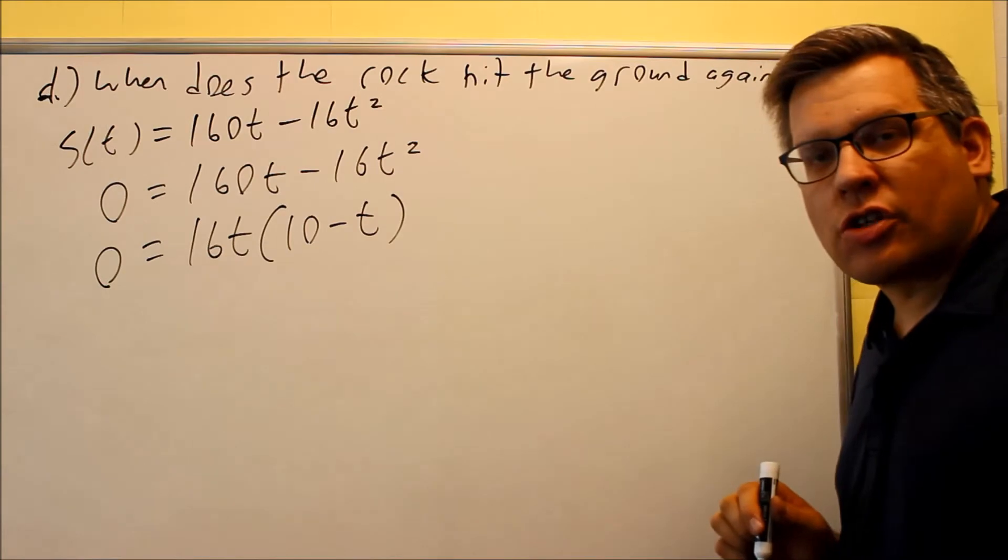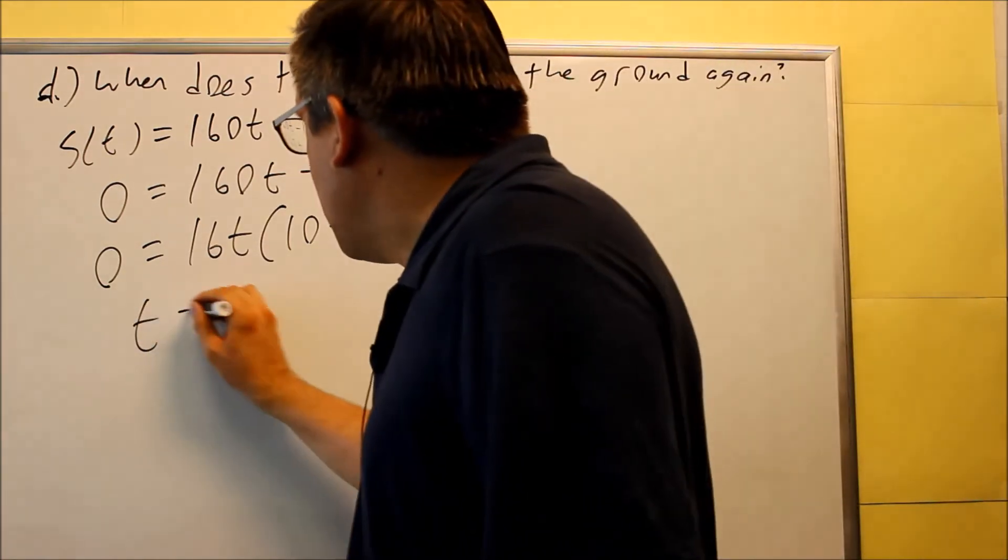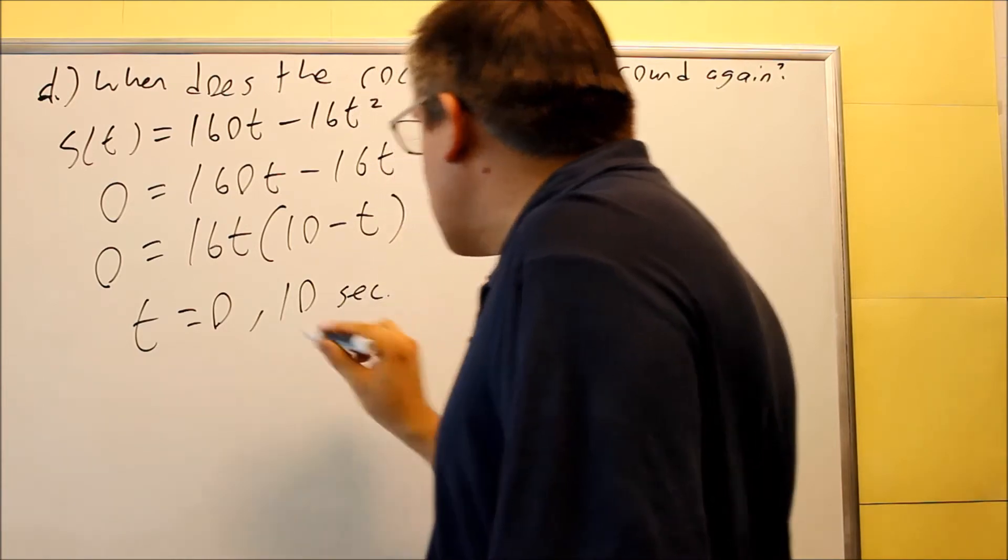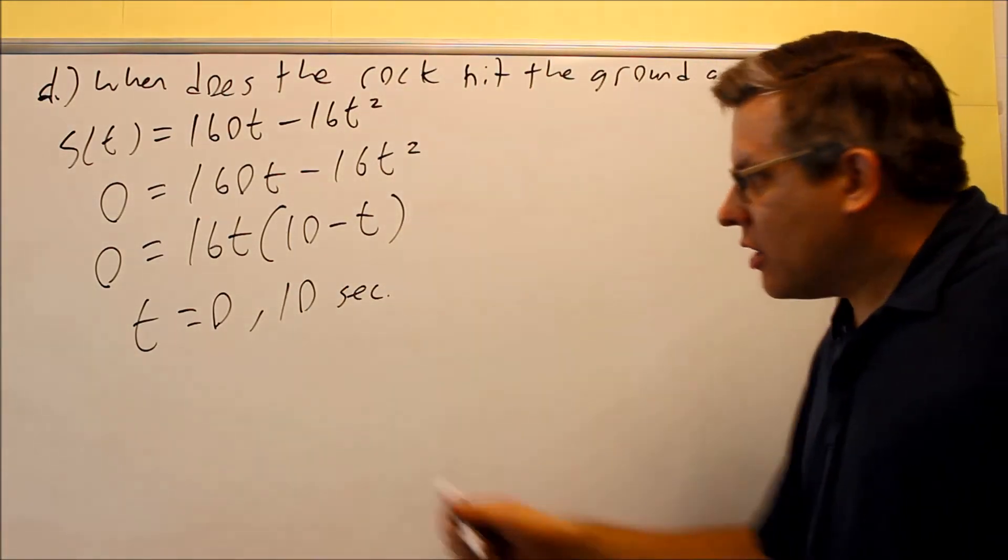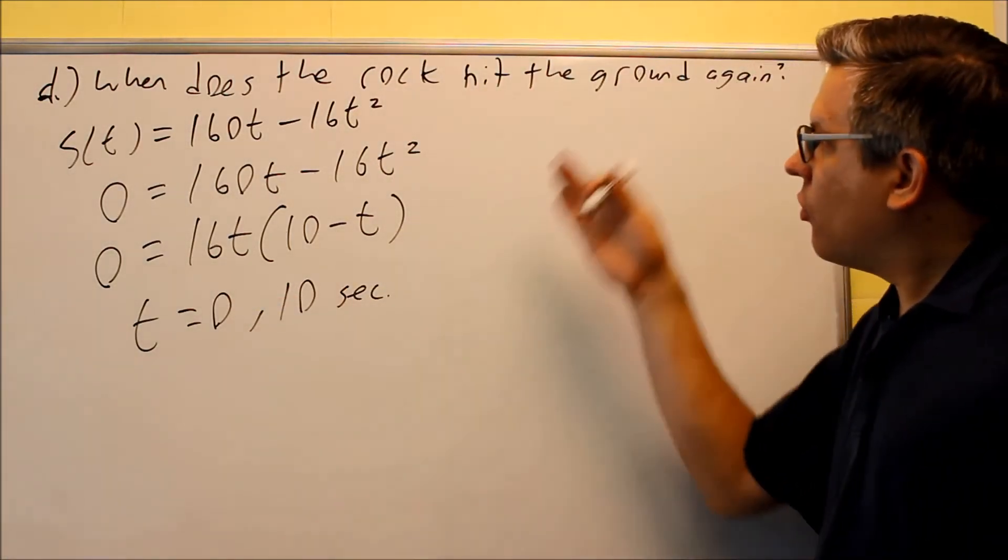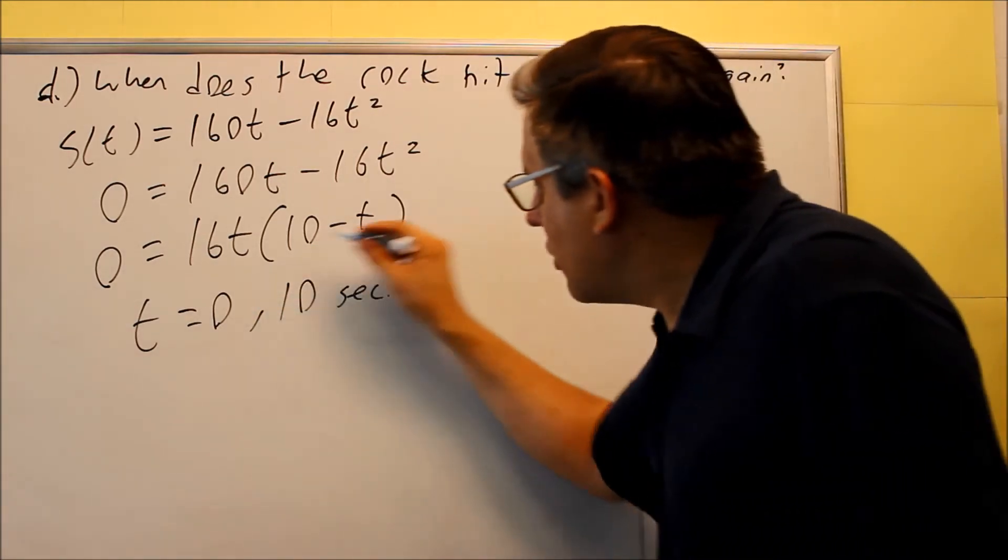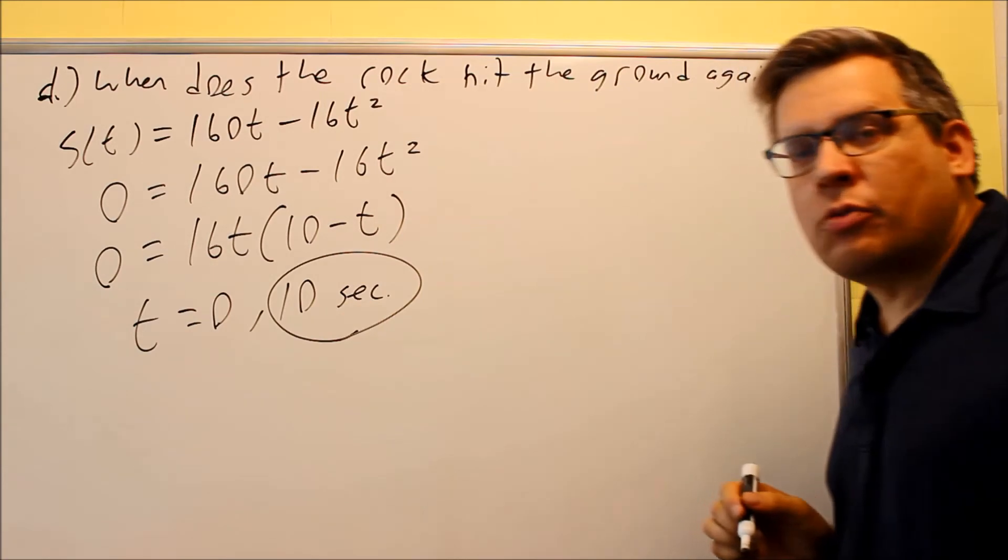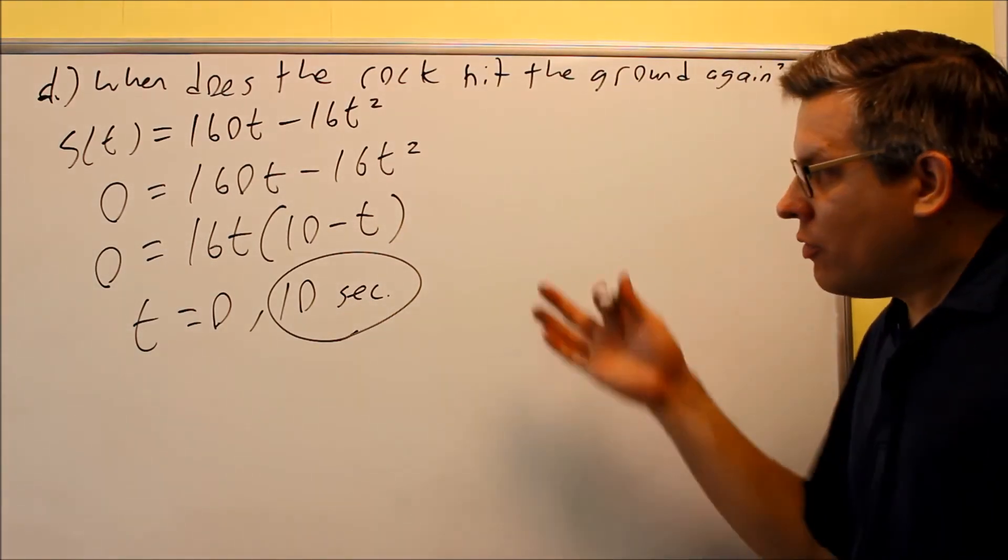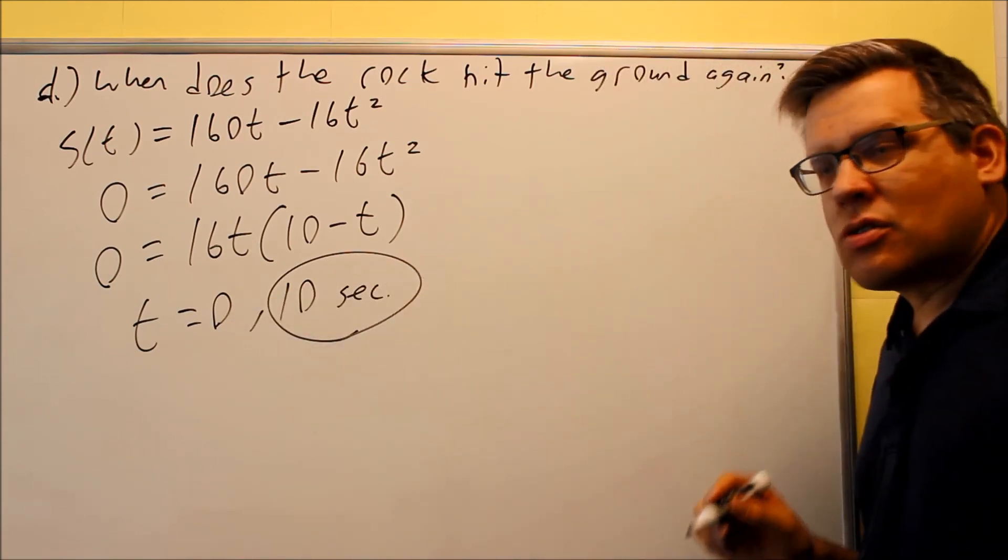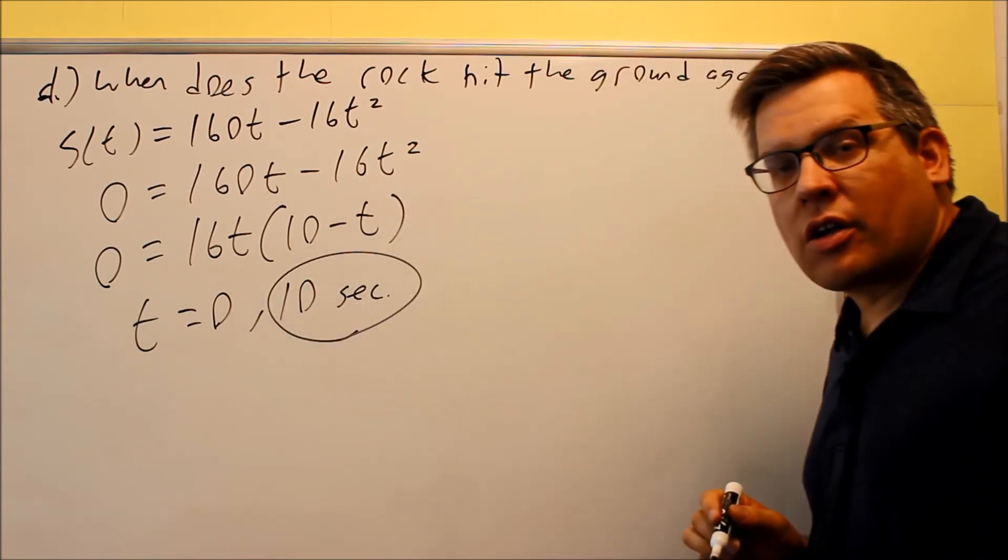We're going to set both of these individually equal to 0, and when you do, you're going to get 0 and 10 seconds. So of course, at 0 seconds, it's going to be on the ground. It's asking us for when does the rock hit the ground again. That's going to occur at 10 seconds. So this is what you would put for your answer. So this is actually telling us that the rock is going to be in the air a total of 10 seconds. So at 10 seconds, that's when it will hit the ground again.